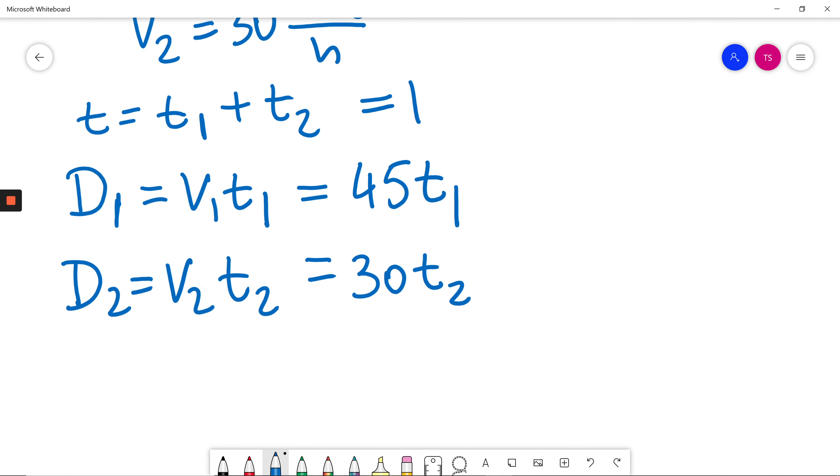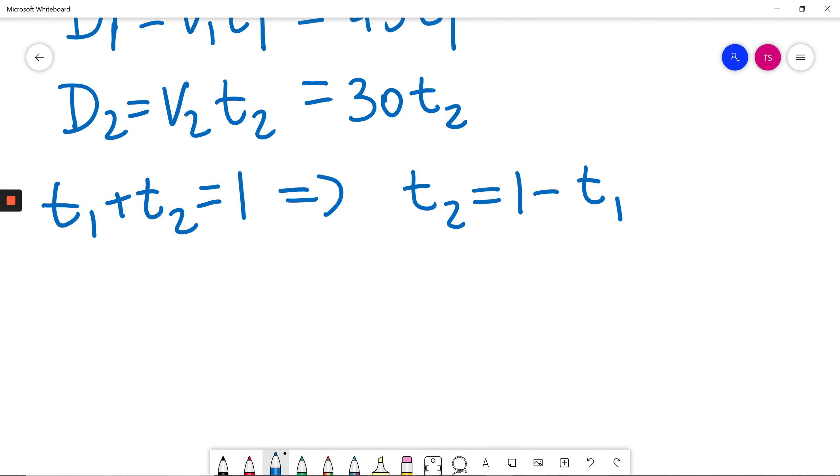Now, knowing that T1 plus T2 is equal to 1, I know that T2 is equal to 1 minus T1. She returned home along the same route,